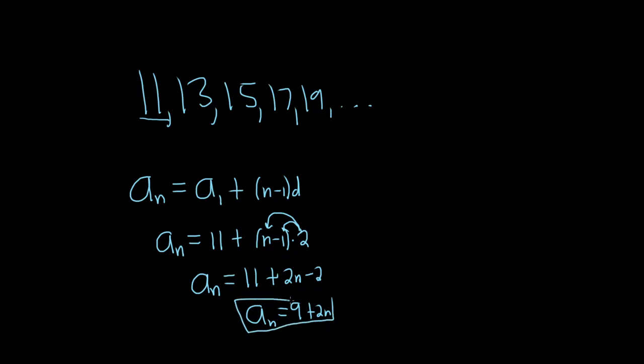This would be the general term or the nth term of the arithmetic sequence. Again, it's always the first term plus n minus 1 common differences. d is called the common difference.